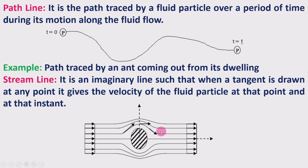The imaginary lines that form are such that if you draw a tangent to them at any point, it gives the velocity of the fluid particle at that point at that instant. These tangents give the velocity, and the imaginary lines we consider in the fluid flow are called streamlines.